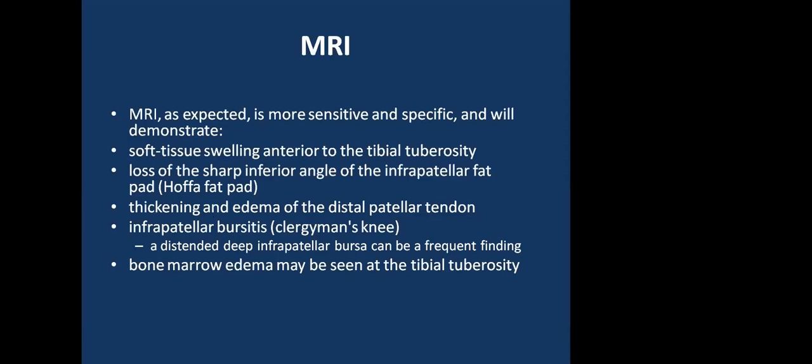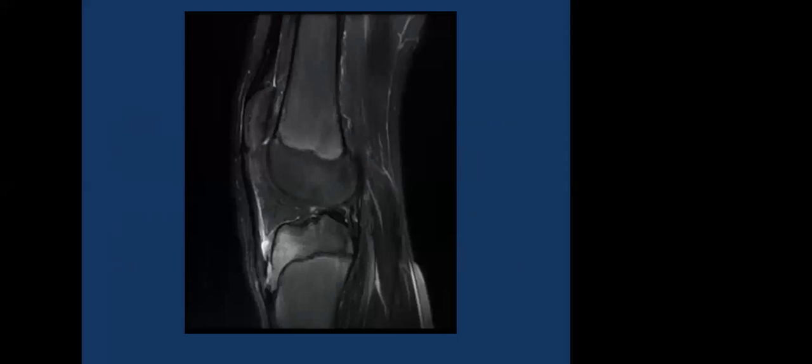On MRI, Osgood-Schlatter disease demonstrates soft tissue swelling anterior to the tibial tuberosity, loss of the sharp inferior angle of the infrapatellar fat pad, thickening and edema of the distal patellar tendon, infrapatellar bursitis with a distended deep infrapatellar bursa, and bone marrow edema at the tibial tuberosity with edema of the soft tissues and possible fragmentation.